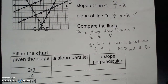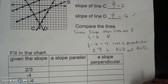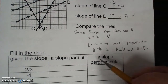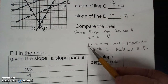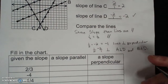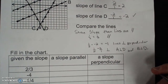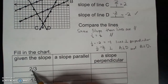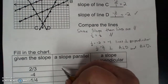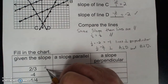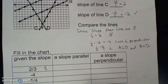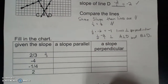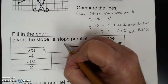So parallel lines have the same slope and different y-intercept. Perpendicular lines have slopes that are opposite reciprocals — flip it over, change its sign. Given a slope, a slope that is parallel is going to be the same.